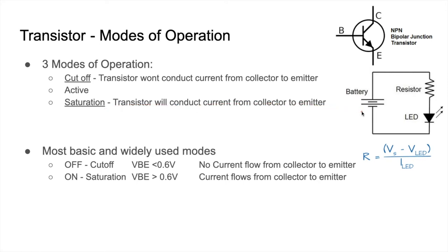A transistor used as a switch will work based on two modes alone: the cutoff mode and the saturation mode. Cutoff mode means the transistor is completely off, meaning no current flow from collector to emitter.